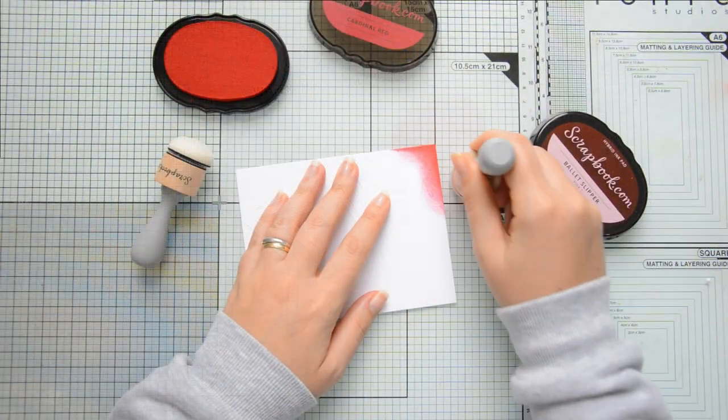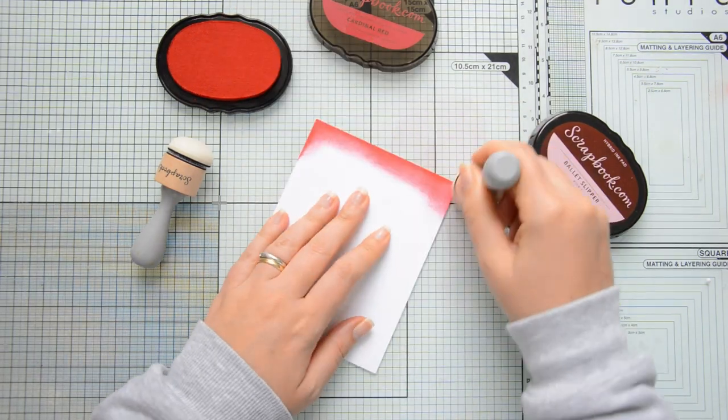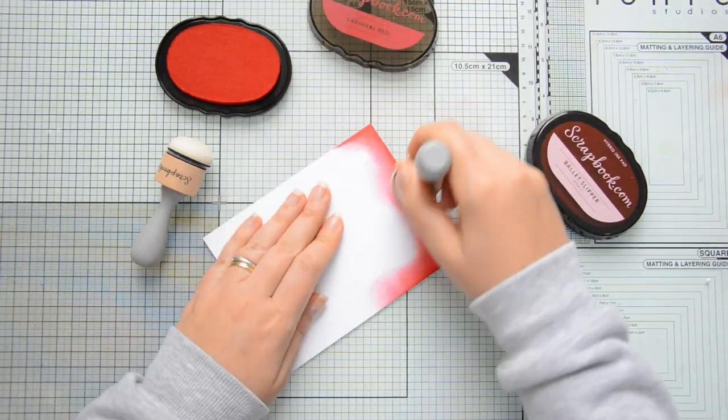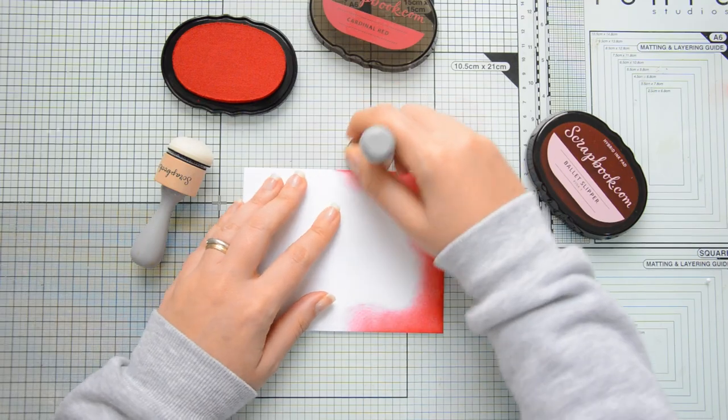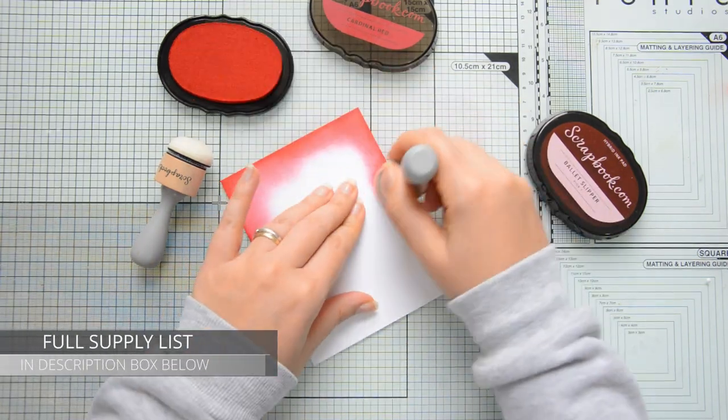For the base of my card I'm going to use one of the pre-cut card bases. These are also by scrapbook.com and this is some Neenah Solar White cardstock.